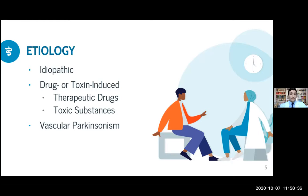Then there is something called vascular Parkinsonism, which is pretty interesting. Subcortical white matter infarcts may lead to symptoms that look like Parkinsonism. The peculiar thing is that tremor is actually absent, but abnormalities of gait are especially evident. That's why it's also called lower body Parkinsonism. Let me show you a video about that.